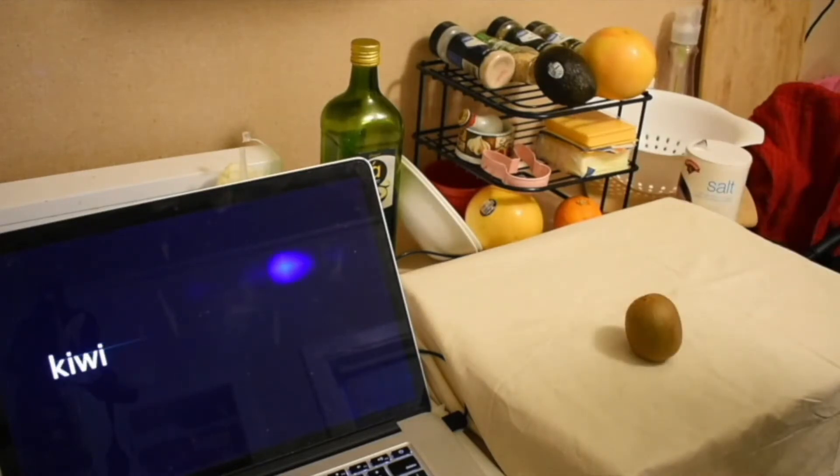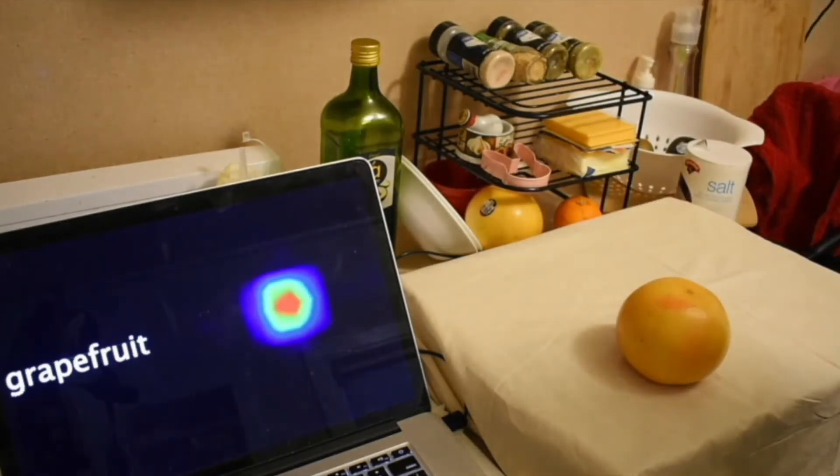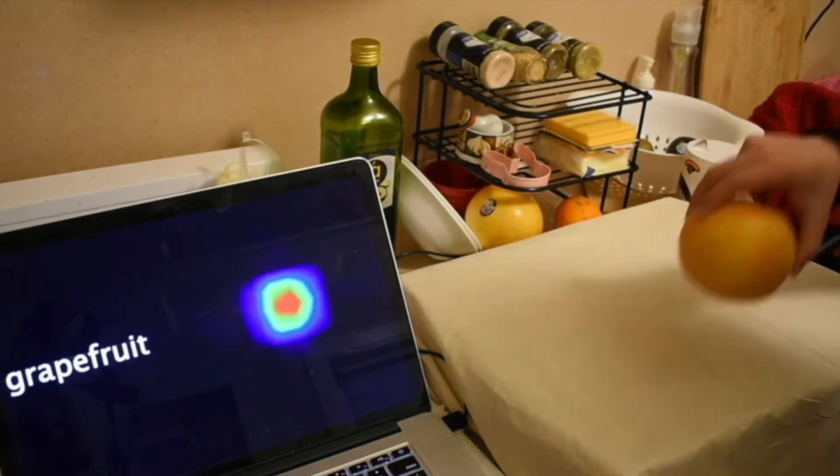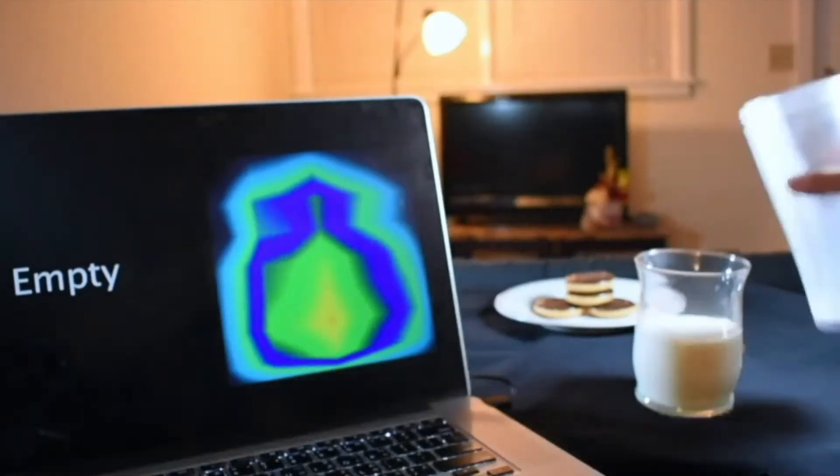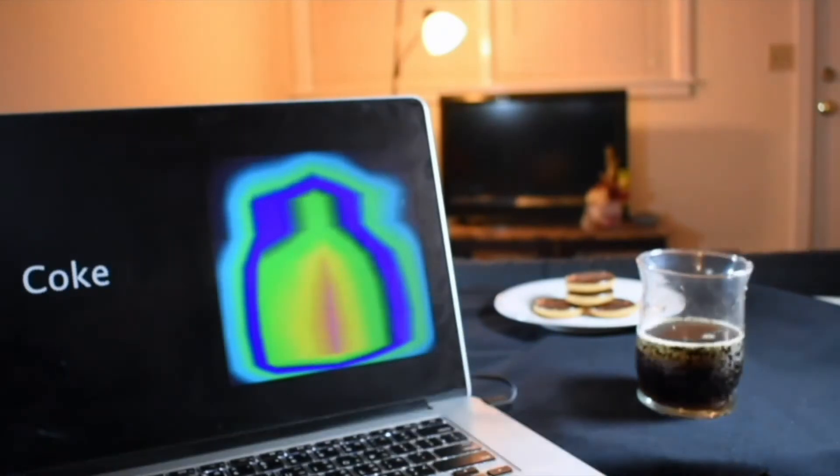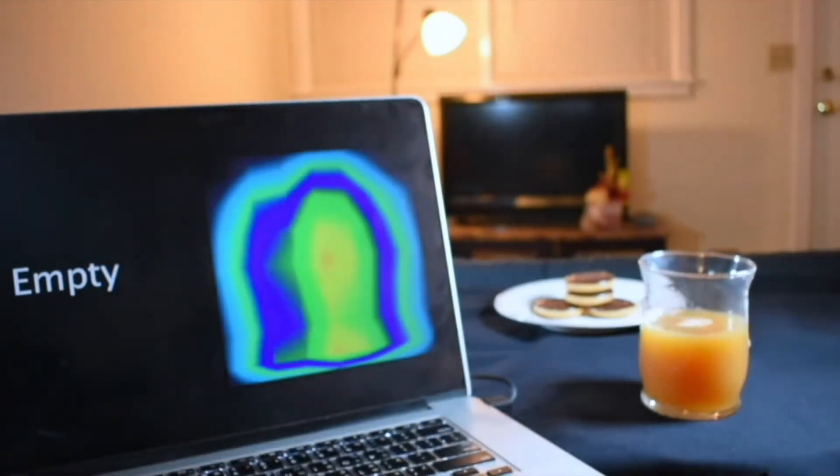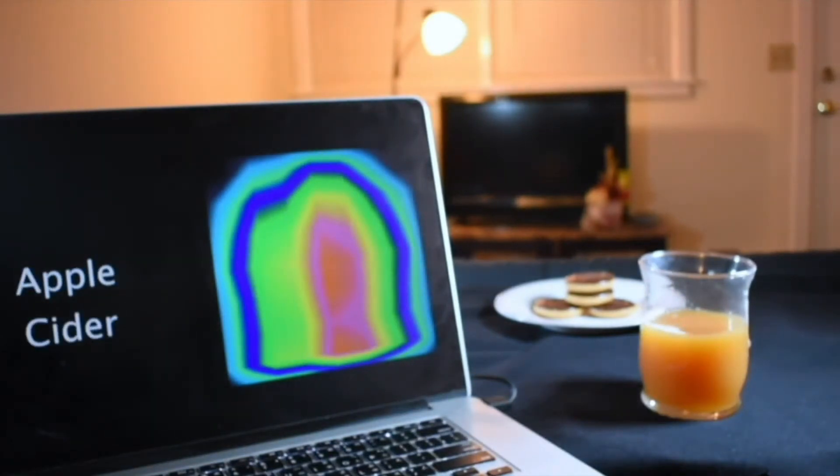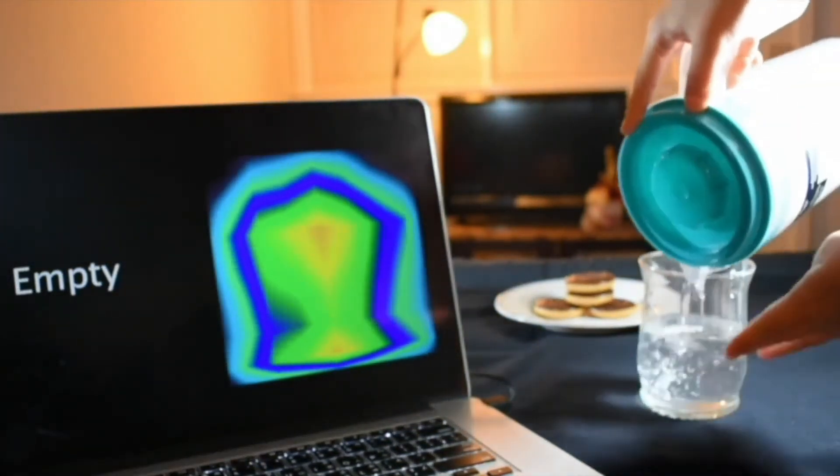Capacitivo is a capacitive sensing technique that makes fabric aware of the object it's in contact with. This includes things like food items and dinnerware. It can also detect the change of what's inside objects like containers or cups. For example, it can differentiate between milk, coke, apple cider, cold and hot water in a regular glass cup.